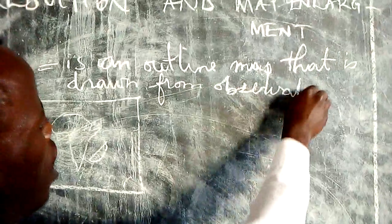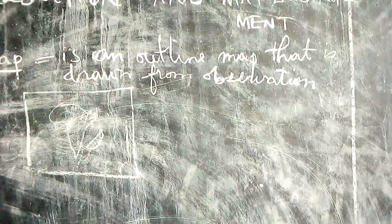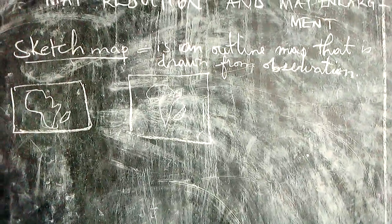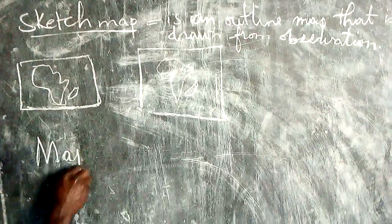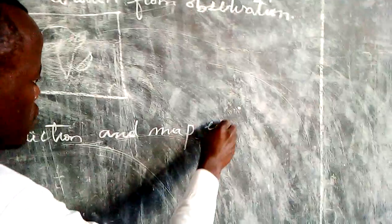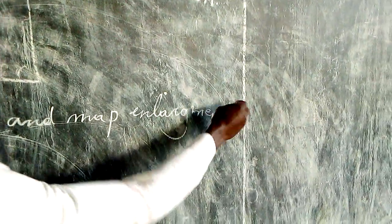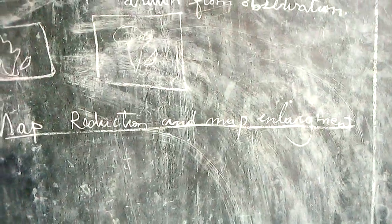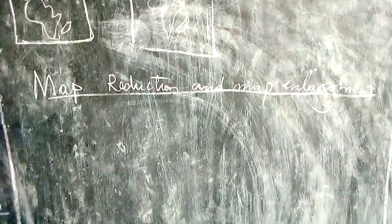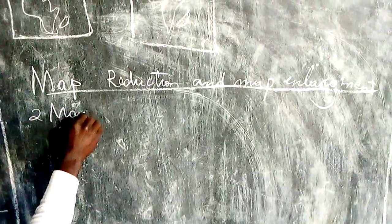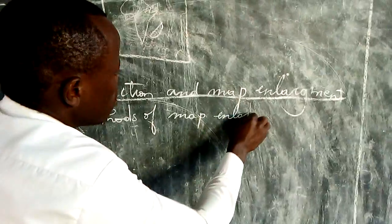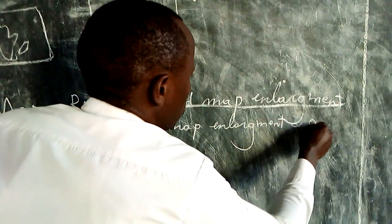Observation. I think this definition of a sketch map is very easy and clear to understand. And now we are also going to look at map reduction and map enlargement. Normally we have two main methods of map enlargement and map reduction.